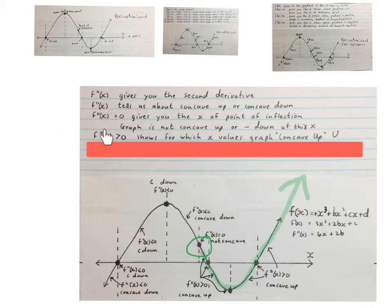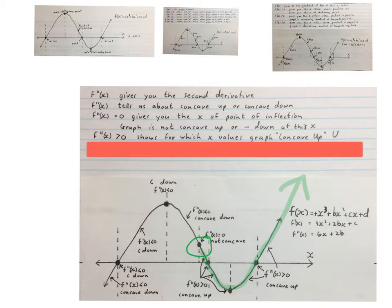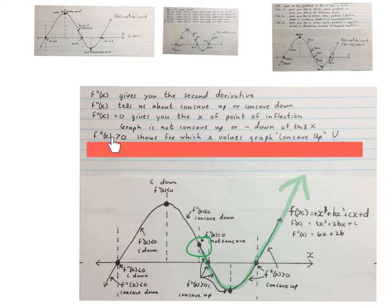Your second derivative bigger than zero, or positive, shows for which x values the graph is concave up — I made a little U here. That is this part of the graph where you see the green, excluding the point of inflection. That is where the graph is concave up, and that's how we write it: the second derivative is bigger than zero.